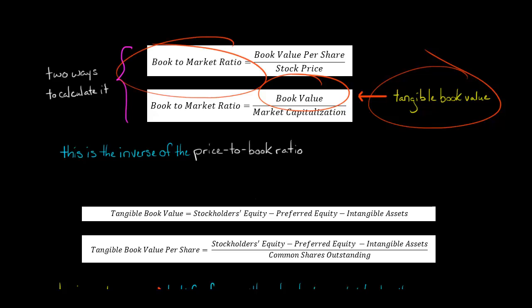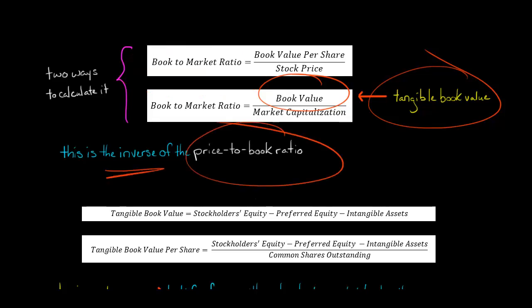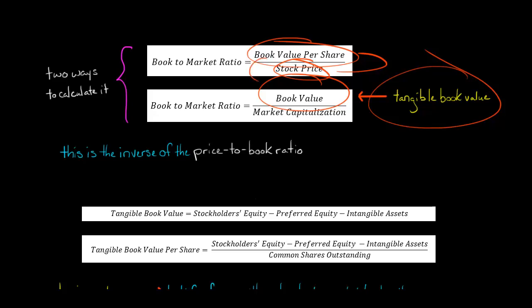The book-to-market ratio is actually the inverse of the price-to-book ratio, which we've talked about in another video. That means if you took a company's stock price and put it in the numerator and then the book value per share in the denominator — if you divided the stock price by the book value per share — you would get the company's price-to-book ratio. So it's just the inverse of the price-to-book ratio.